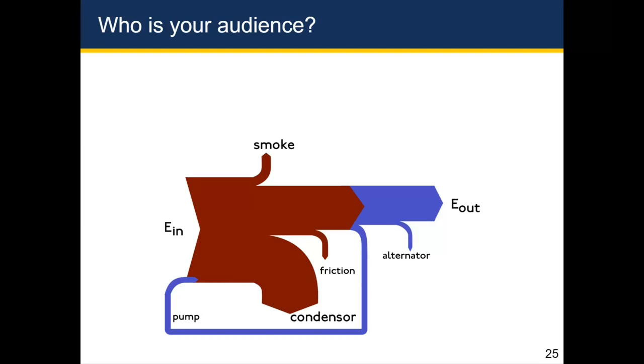I'm not sure if any of you have seen this plot before. This is a plot that helps people figure out or communicate that if energy is coming into a system and some of it's leaving because of friction or smoke, the energy that comes out of the system will be less than what came in because of inefficiencies in the system. This is known as a Sankey diagram.